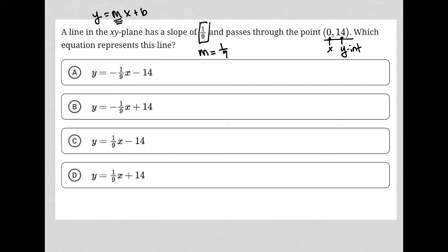which we call b in our slope intercept equation. So we know that m is equal to 1/9th and we know b is actually equal to 14.